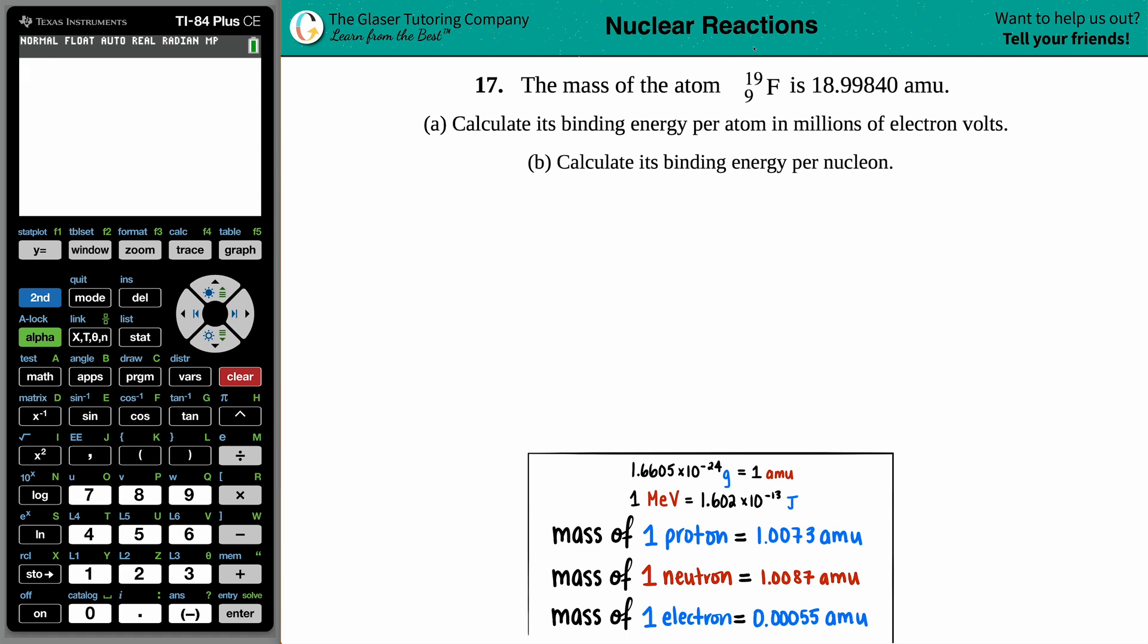Number 17. The mass of the atom fluorine, that has an atomic mass of 19 with an atomic number of 9, is 18.99840 amu. Letter A: Calculate its binding energy per atom in millions of electron volts.